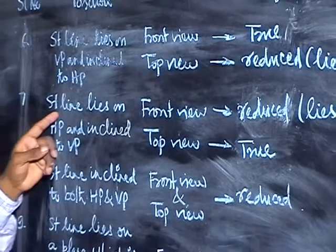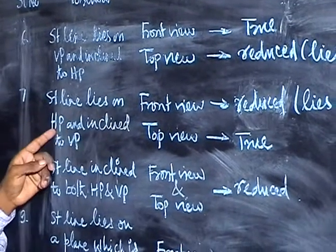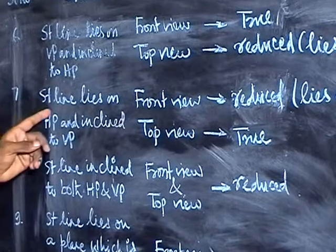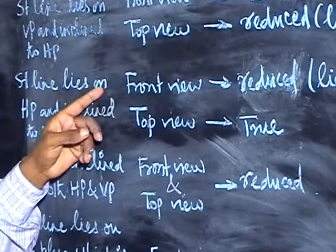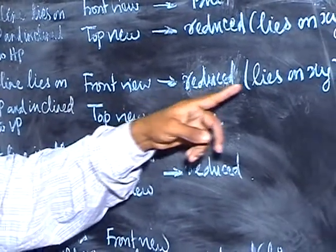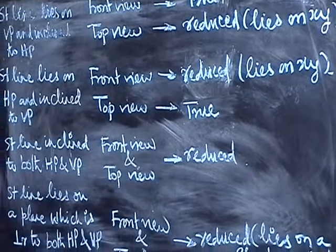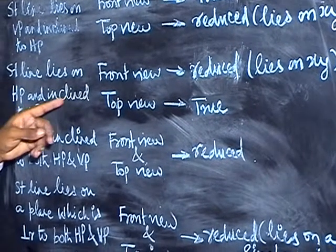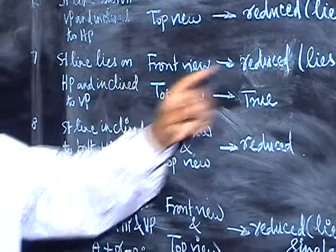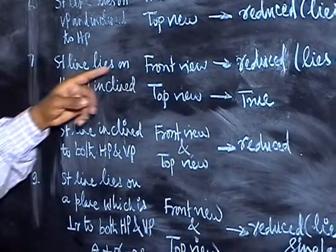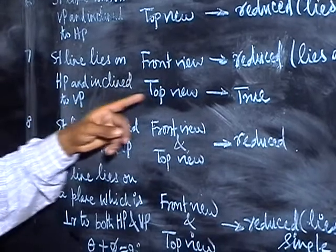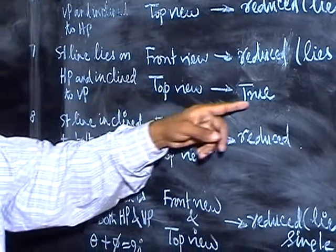In the next case, the straight line lies on HP and is inclined to VP. Since it lies on HP, the front view will be of reduced length and will lie on the XY line. Since the straight line is inclined to VP, the front view will be of reduced length. The top view will be of true length.